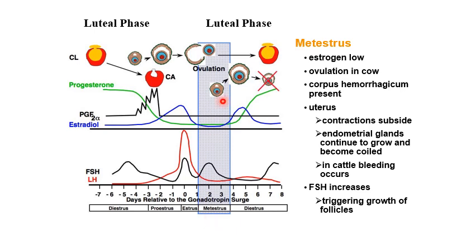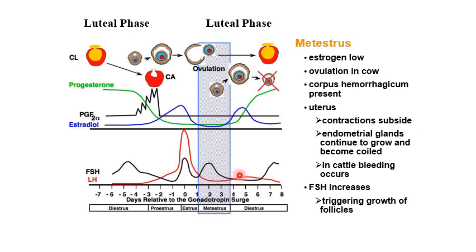Metestrus is under the luteal phase. During metestrus, estrogen is low because the follicle has ovulated. In the cow, ovulation occurs about 11 hours after the end of estrus — already in the metestrus phase. After ovulation, the regressed follicle becomes the corpus haemorrhagicum, uterine contractions subside, and endometrial glands continue to grow and become coiled. In cattle, this corresponds to when bleeding occurs. There is also an increase in FSH in preparation for triggering follicle growth.